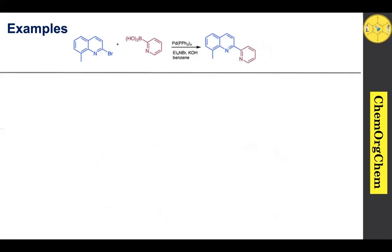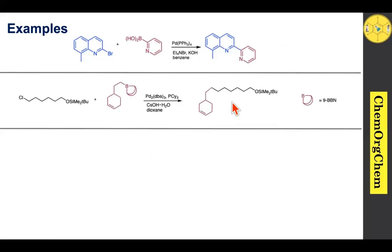Just as aryl-aryl coupling is feasible, heteroaryl-heteroaryl coupling is also feasible under Suzuki reaction conditions. Bromoquinoline readily reacts with pyridine boronic acid to produce the corresponding carbon-carbon coupling product. In another example, an organoborane (9-BBN) is cross-coupled with a chloro compound in the presence of palladium and tricyclohexylphosphine as an electron-rich phosphine to produce the corresponding product. We will explain what 9-BBN is in upcoming slides.